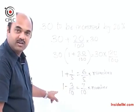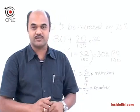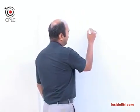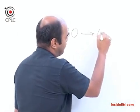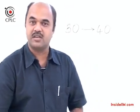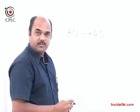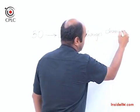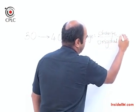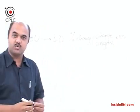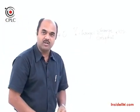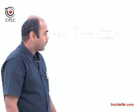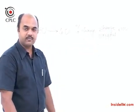We now move on to the concept of percentage change. Suppose we have a value of 30 that changes to 40 — what is the percentage change? This is solved using the formula: percentage change equals change upon the original value, multiplied by 100. Here the change is 10 and the original value is 30, so the answer is 10 upon 30 into 100, which is one third as a percentage — that is 33.33 percent.